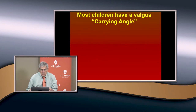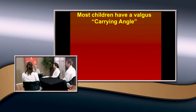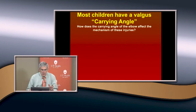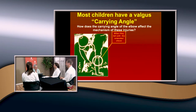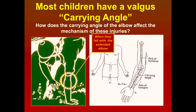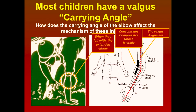How does the valgus carrying angle affect the mechanism of injury? It stresses the radial capitellum joint. So when they fall on the extended elbow with a valgus alignment, that concentrates compressive forces laterally. Most of these fractures are failure in compression. The secondary mechanism is as part of a combined fracture or joint dislocation complex injury.